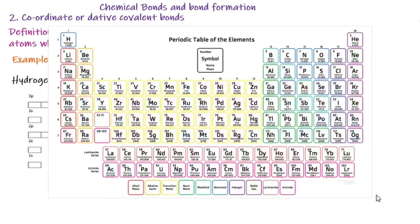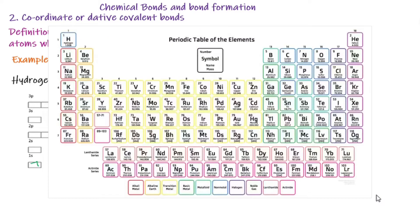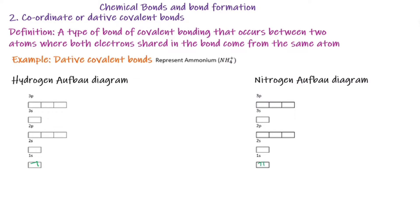If I come to my aufbau diagram, I will fill in the first energy level using an arrow, so we only have one electron. For my nitrogen, nitrogen is found in group 15 and has seven atomic numbers. So let's start filling: one, two, three, four, five, six, seven.